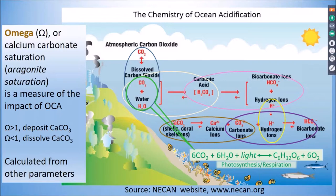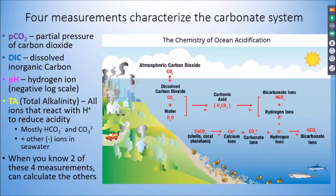Biology always gets in there and makes things more complex. If there are plants or phytoplankton around with enough light and nutrients, photosynthesis happens and some CO2 and water gets converted into sugars and oxygen. In the other direction, fish, snails, and microbial interactions respire — that drives the reaction in the other direction, breaking down sugar, consuming oxygen, and creating more CO2. There is an even bigger source of CO2 through respiration, and this turns out to be quite important in the coastal ocean.